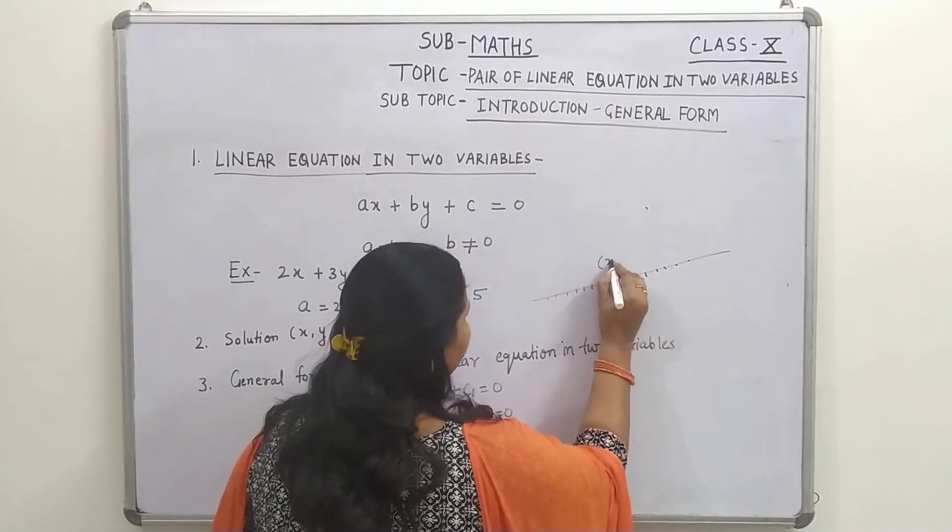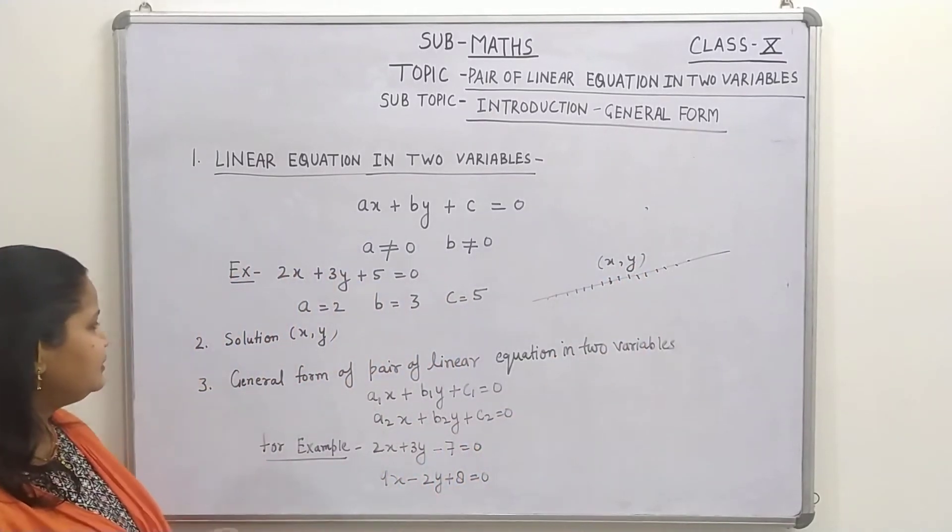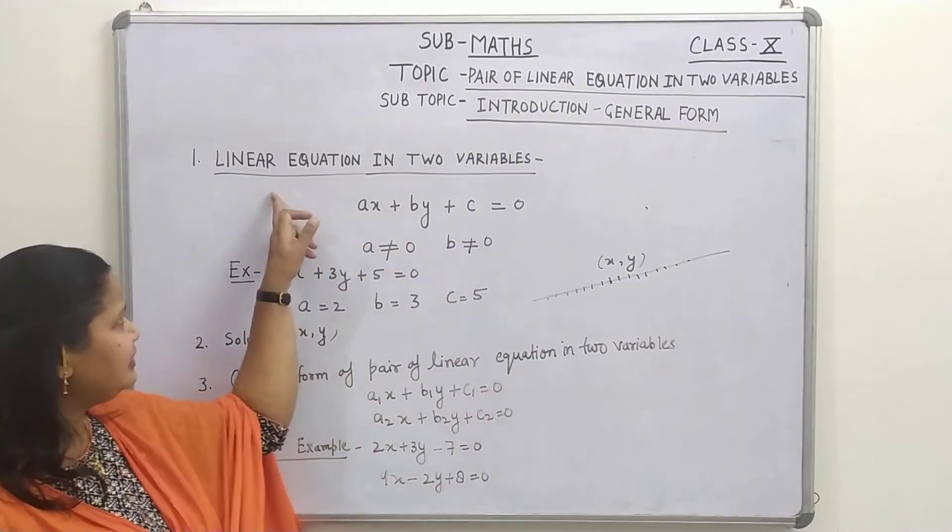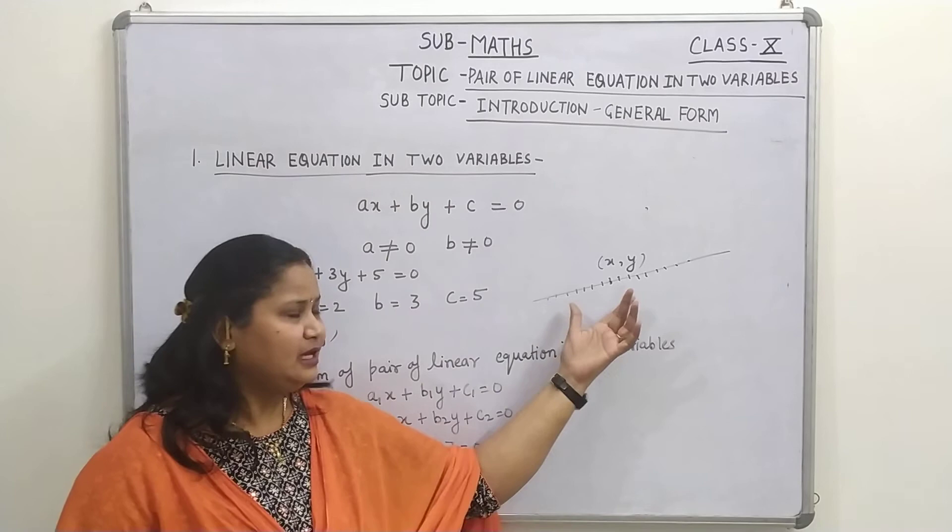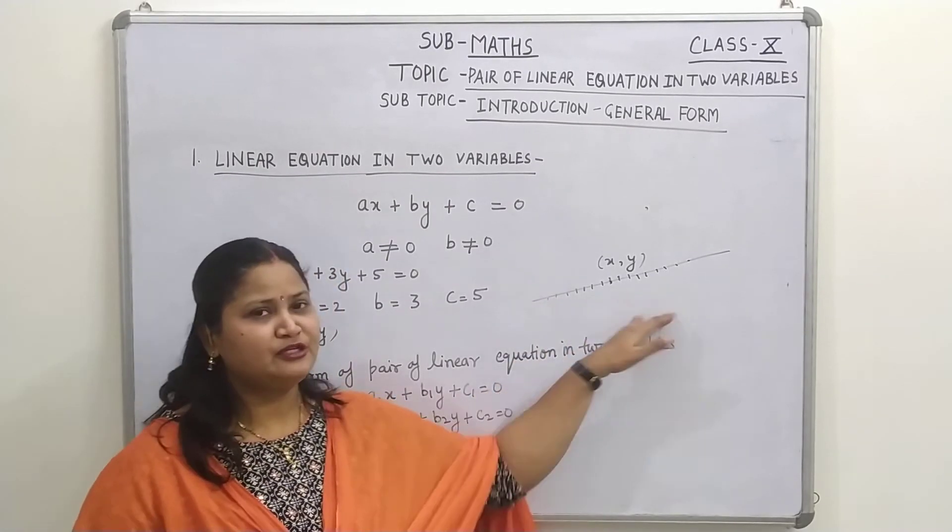So, every point, as you know, every point may be in the form of XY. So, all the points which exist on this line are the solution of this equation. That's why linear equation in 2 variables has infinitely many solutions because there may be infinite points on this line.